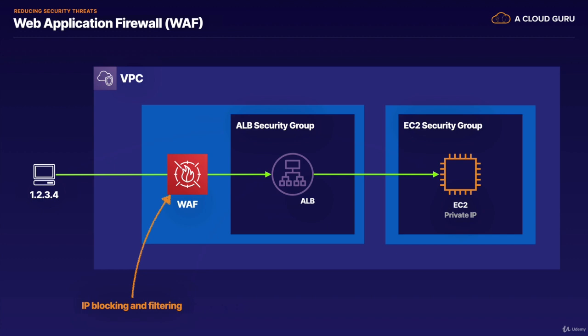So when might you want to use WAF, and when might you want to use a NACL? If you want to block common exploits like SQL injection or cross-site scripting attacks, then you have to use WAF. WAF operates on layer 7 and can inspect that level of traffic for these types of exploits. If you want to block an IP or range of IPs, then you want to use a NACL, which operates on layer 4. Keep in mind that hackers will often use multiple IPs in different ranges to attack you. If you rely solely on NACL rules, you're going to have a hard time keeping up. So if you're operating a public web application, you really want to prefer WAF in these instances.